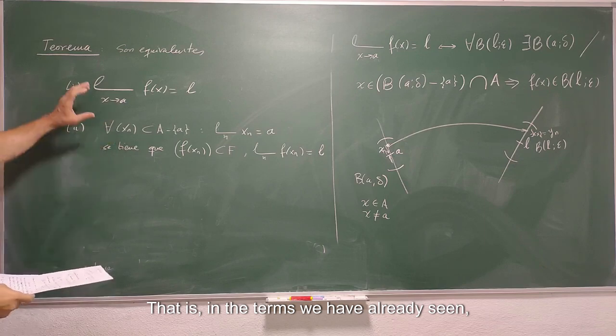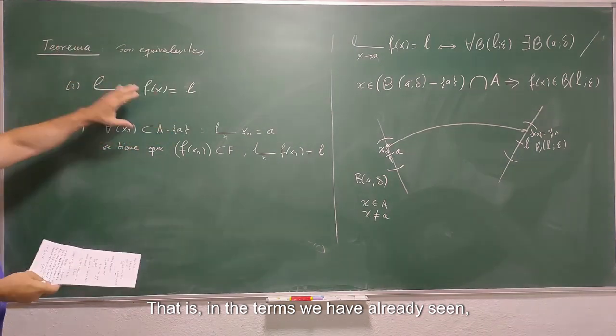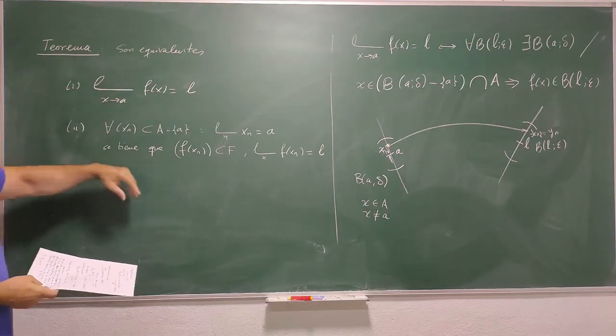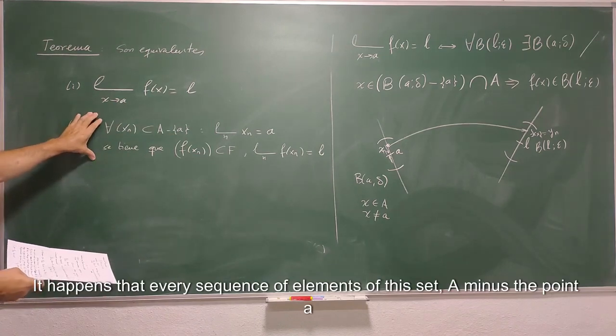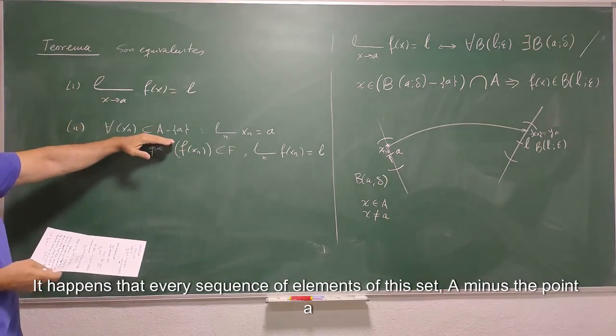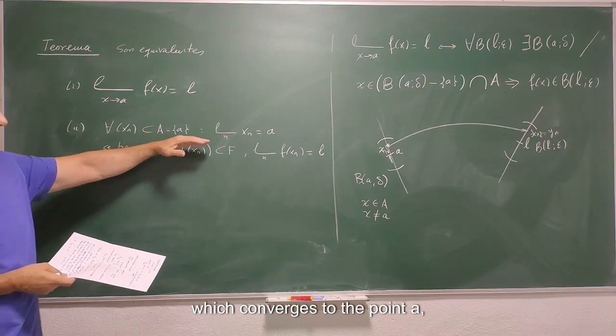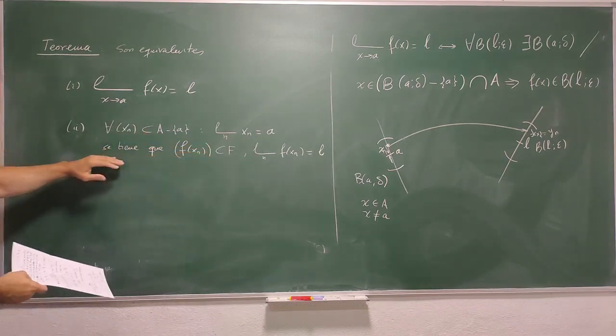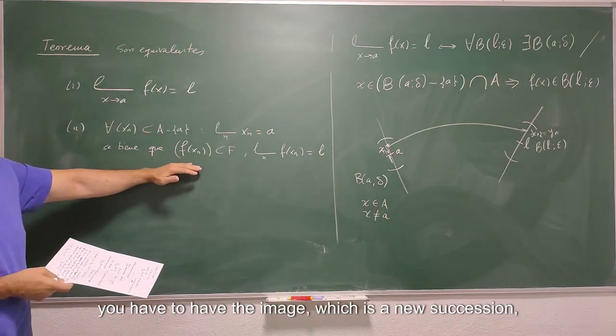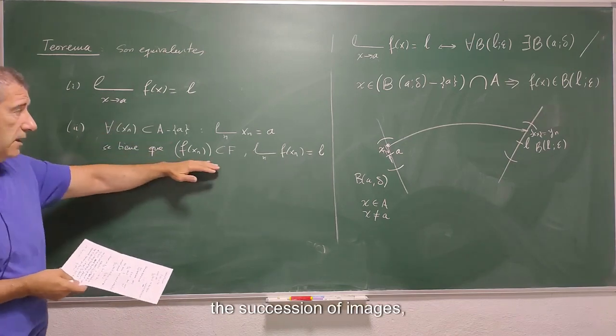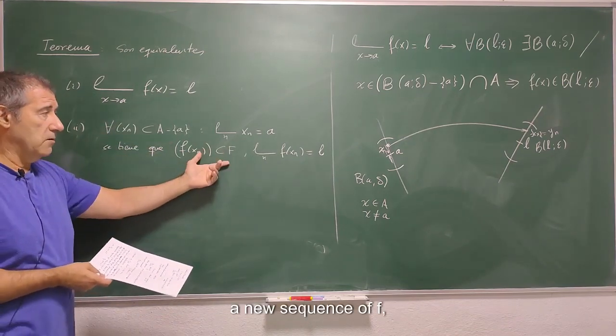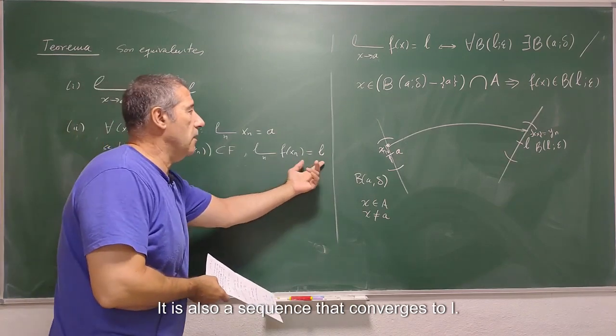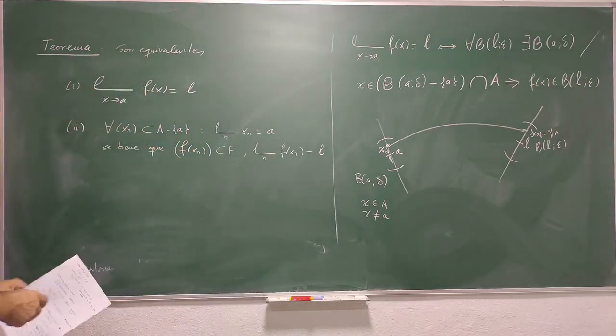That is, in the terms we have already seen, if this limit is L, it happens that every sequence of elements of this set A minus the point a which converges to the point a, you have to have the image which is a new succession, the succession of images, a new sequence of F, it is also a sequence that converges to L. Okay?